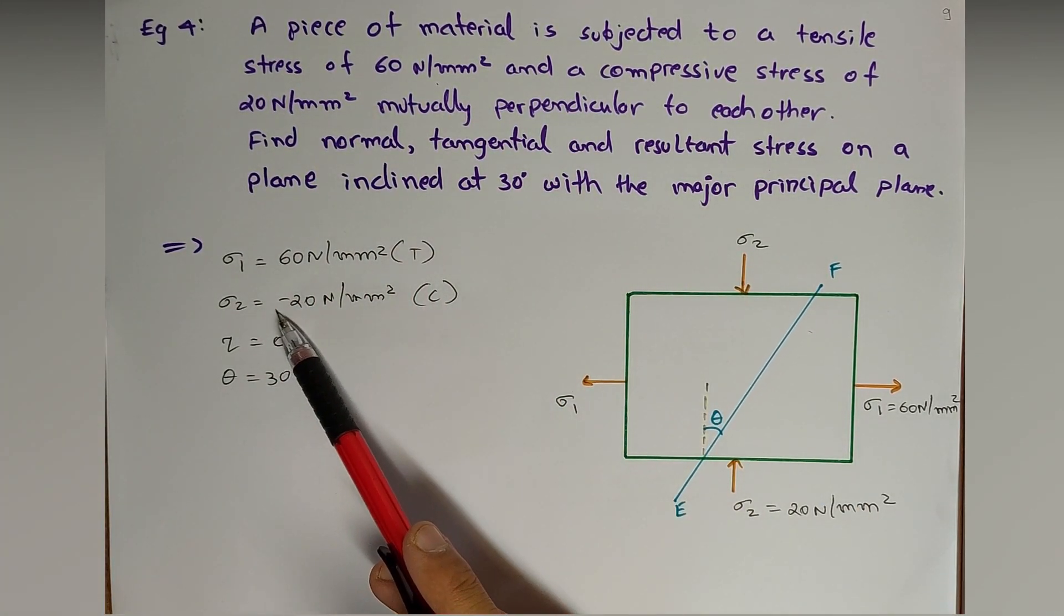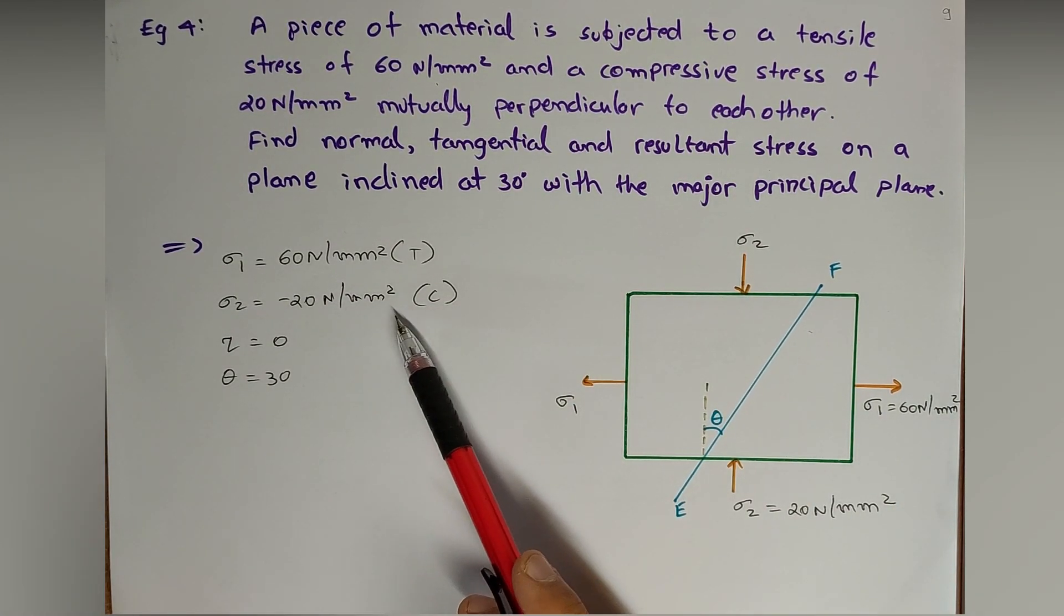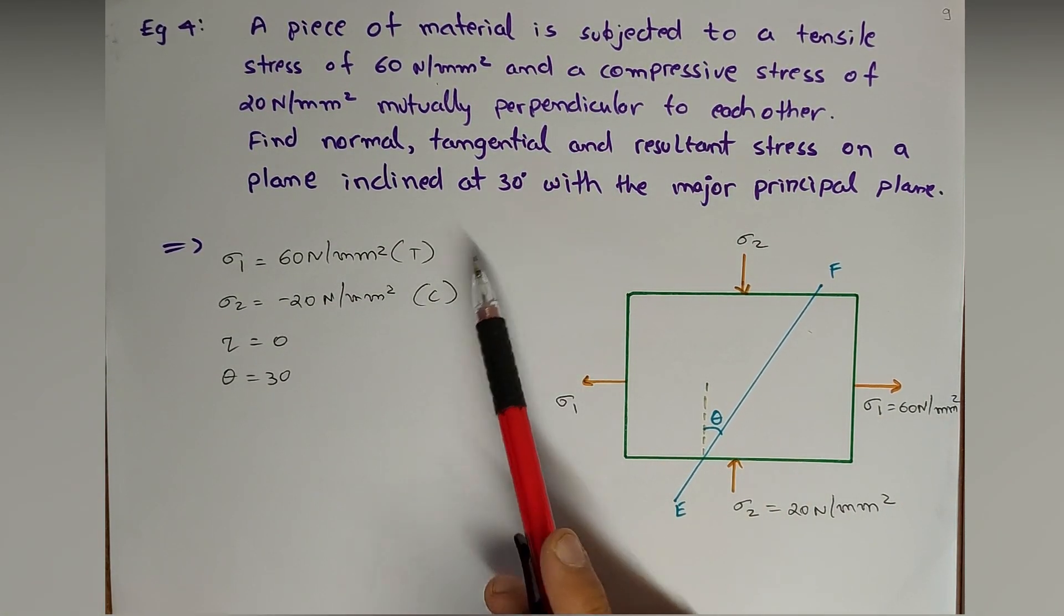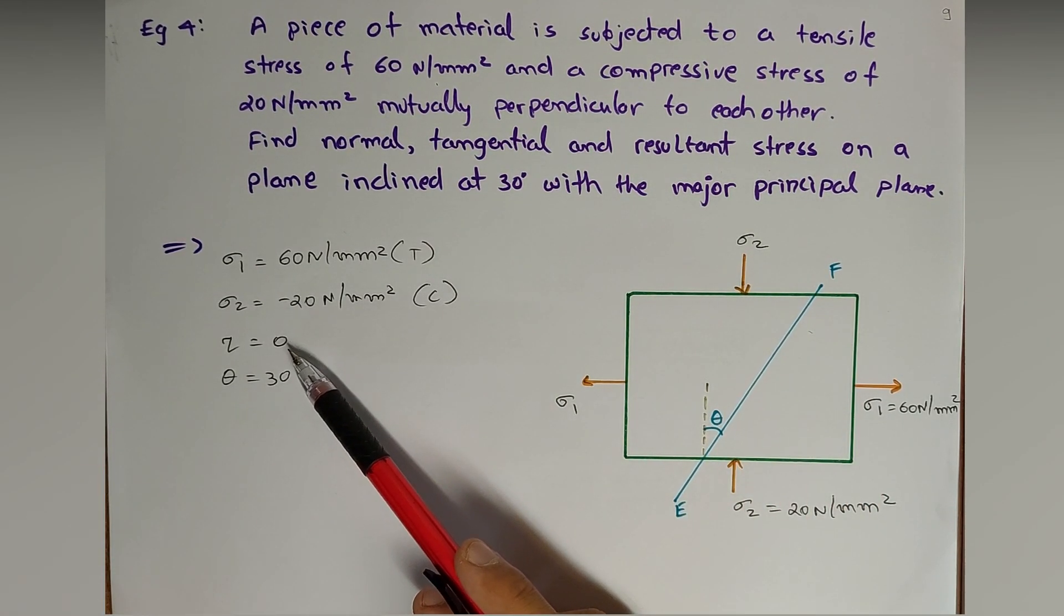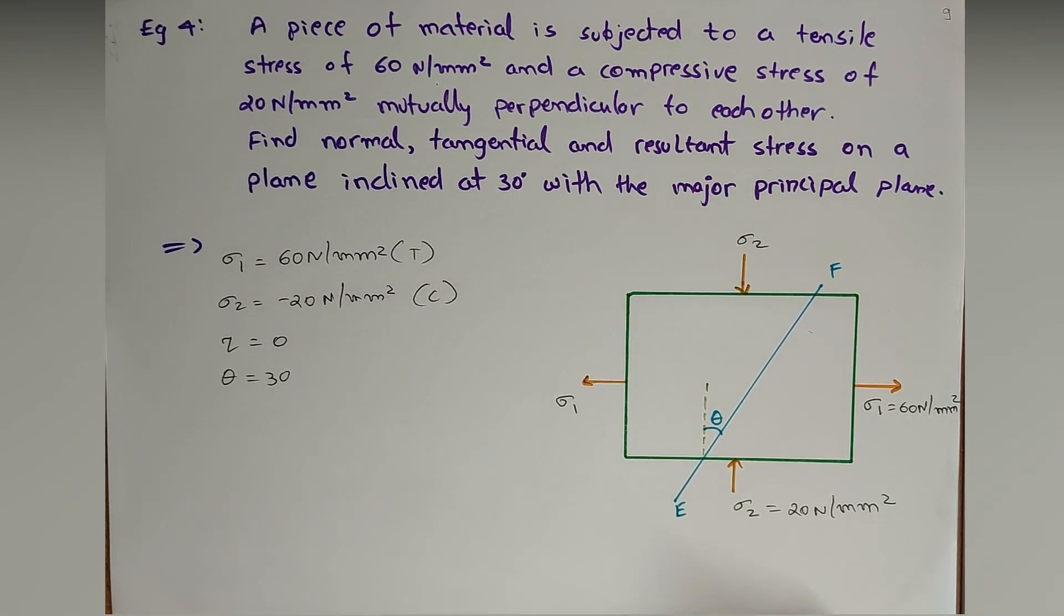Though in the question it was not mentioned negative, I have written negative only because the direction of sigma 2 is opposite to that of sigma 1, which is always positive. It is compressive. There is no shear stress, so its value is zero, and theta mentioned in the question is 30 degrees.